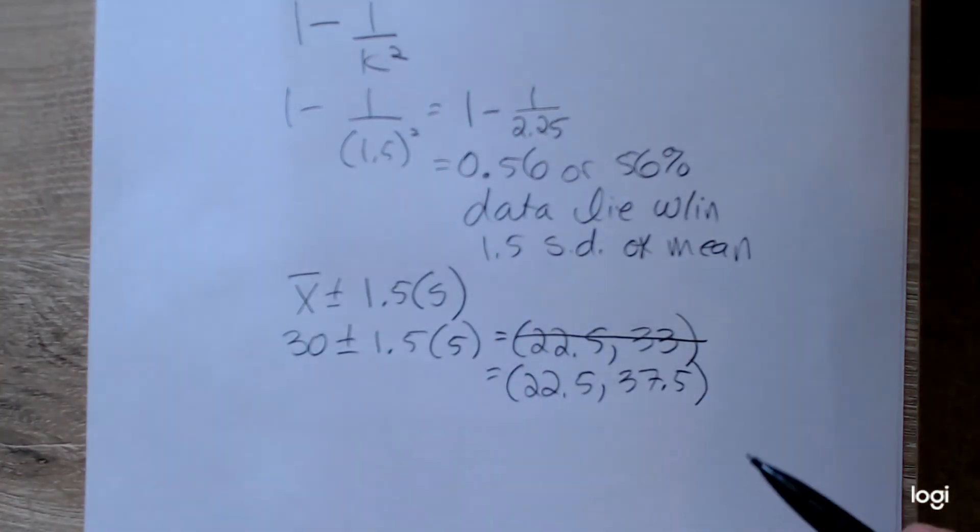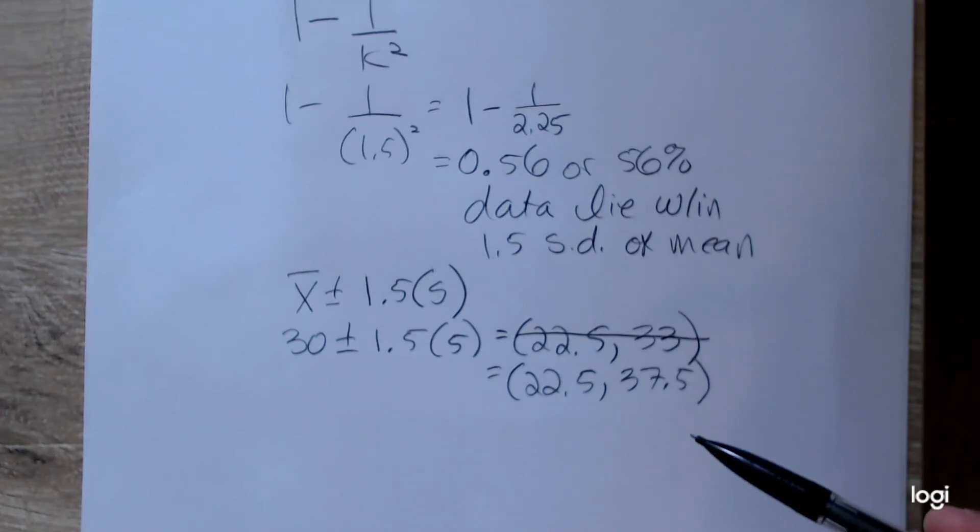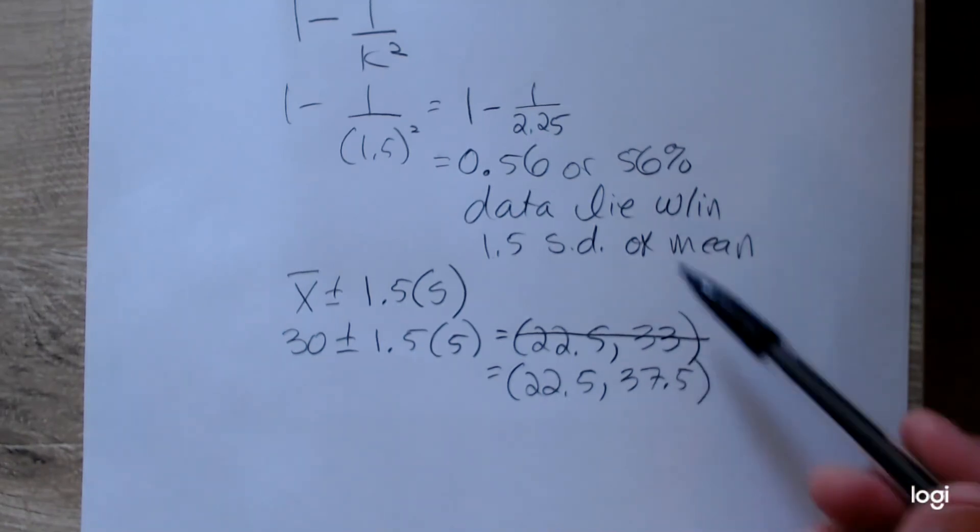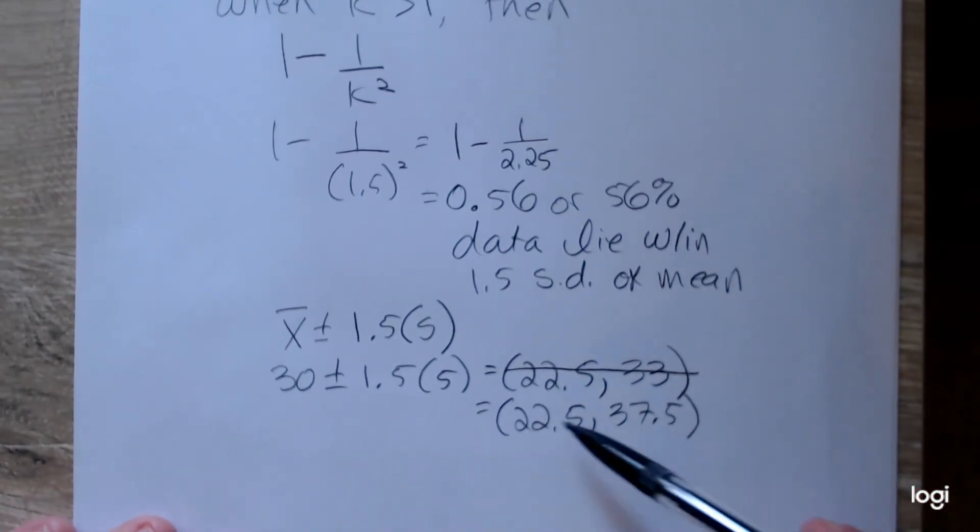That looks a little better. So Chebyshev's theorem says that about 56% of the values will lie within this interval.